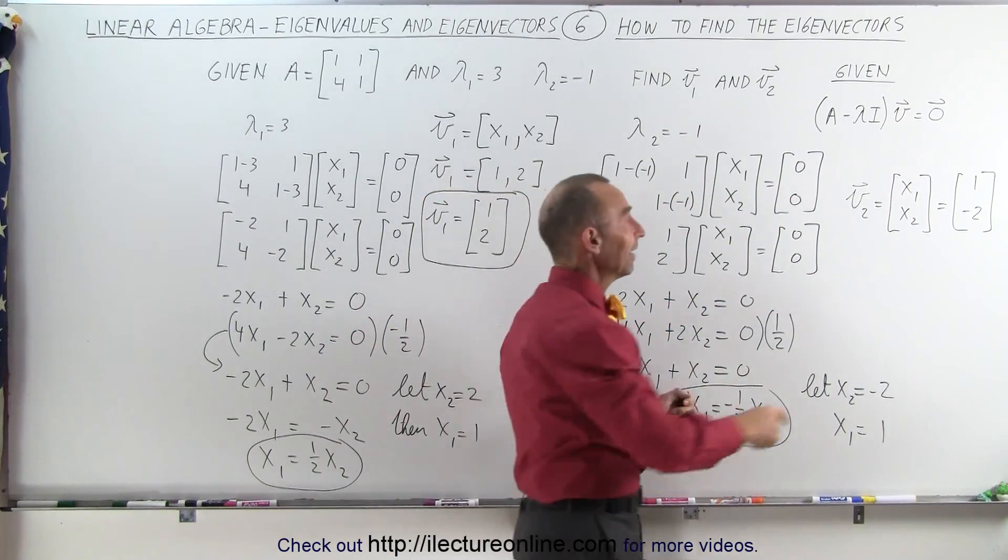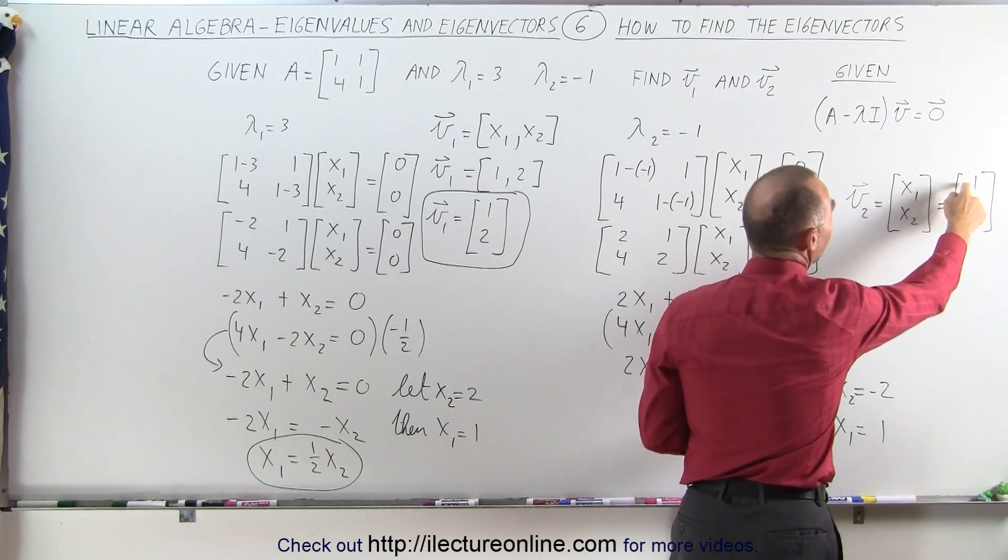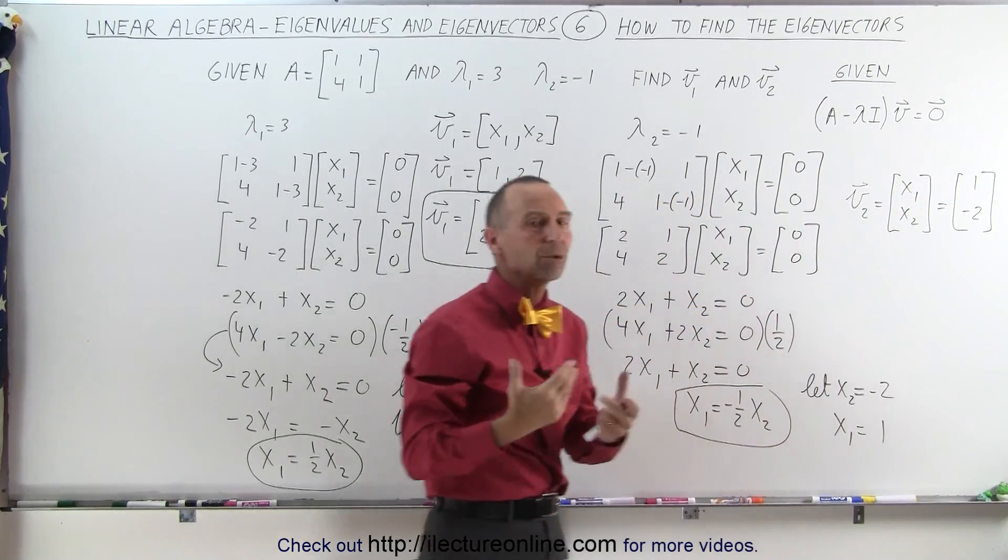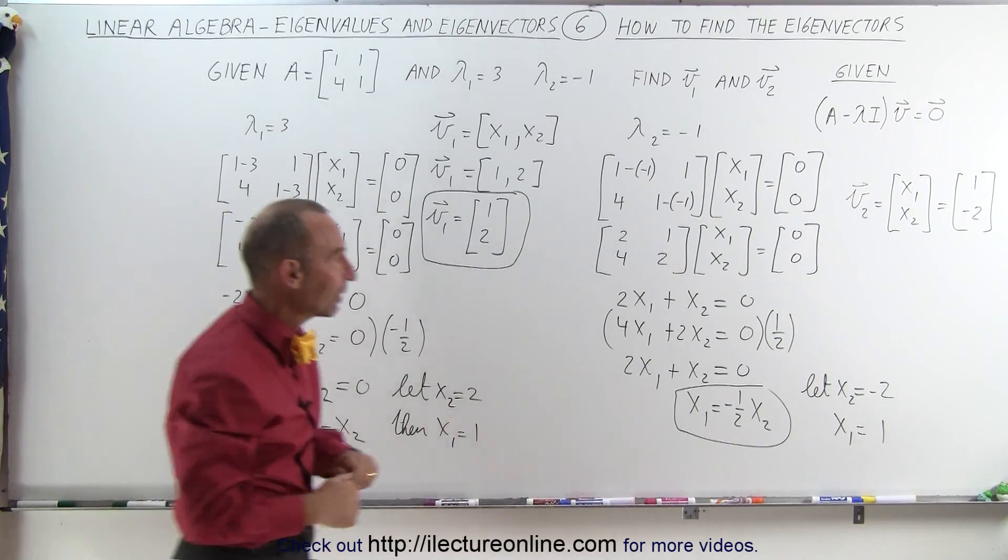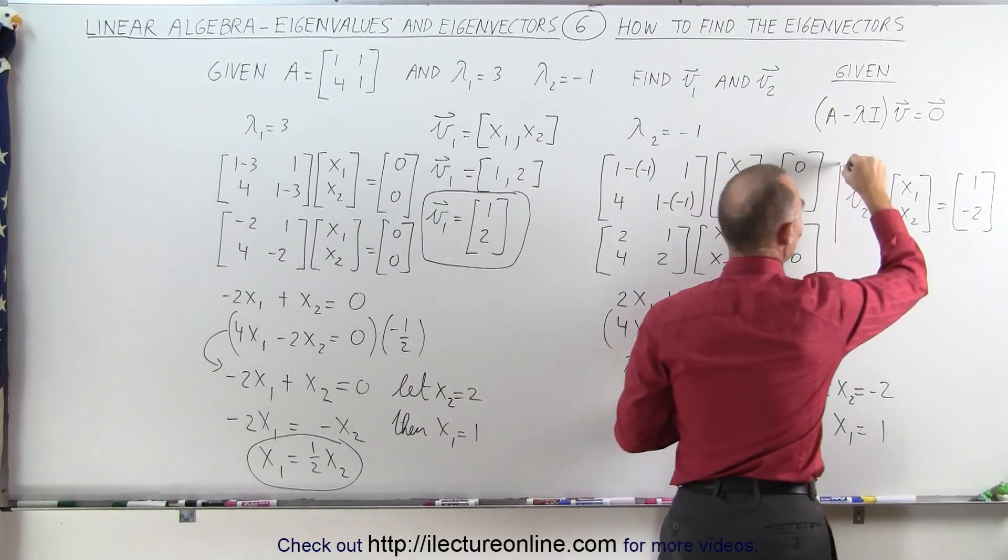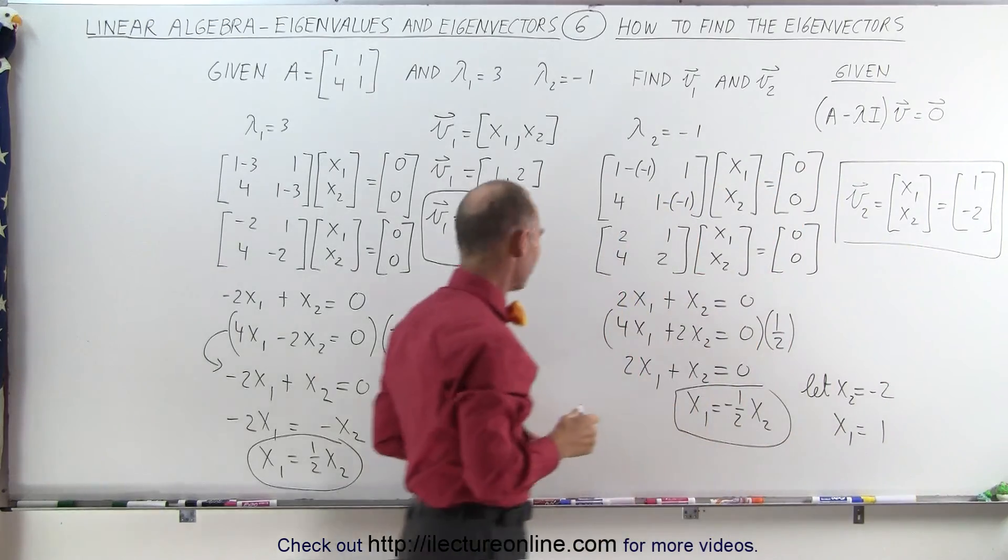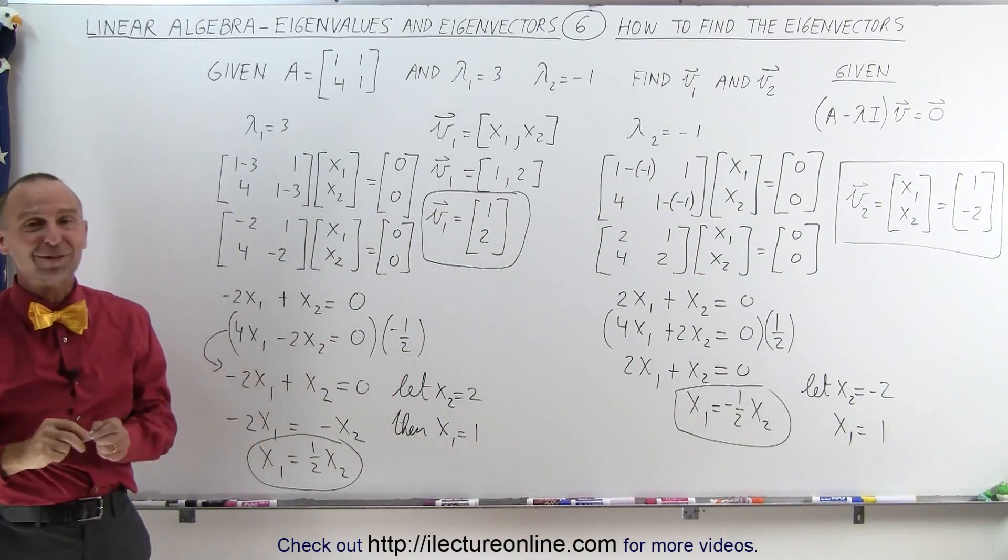I could have called this a positive 2, and this a minus 1. The relationship between the two would be exactly the same. And those are the two eigenvectors that we were looking for for that 2x2 matrix. And that's how that's done.